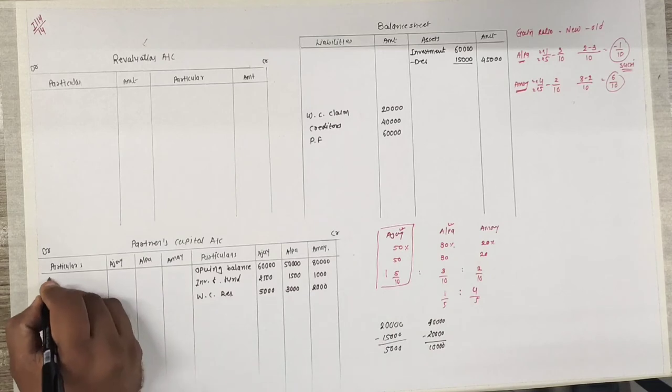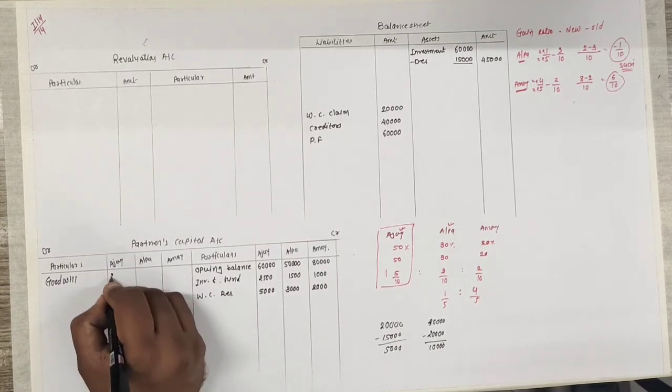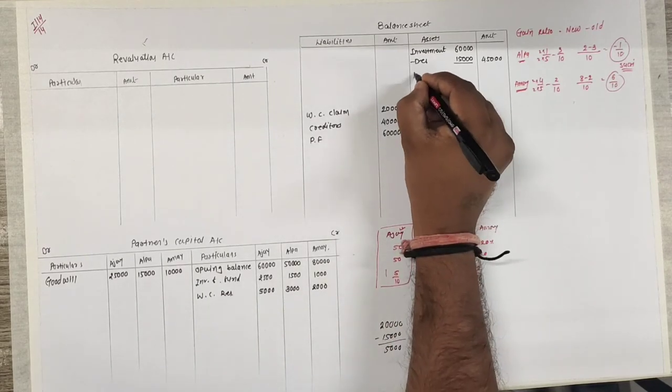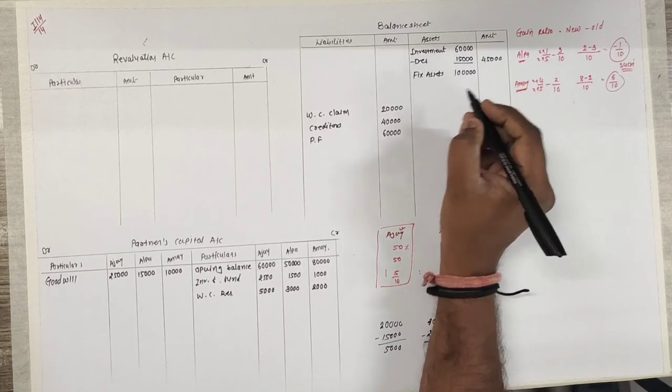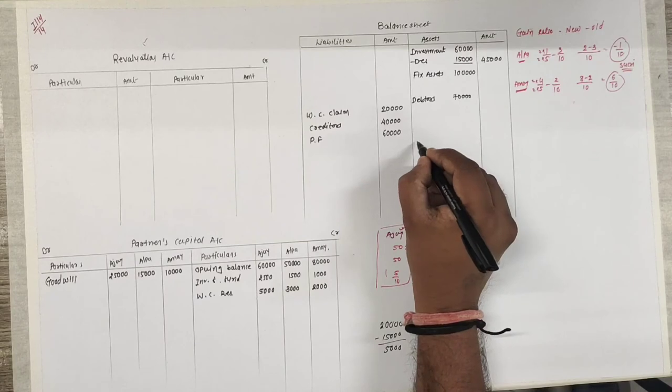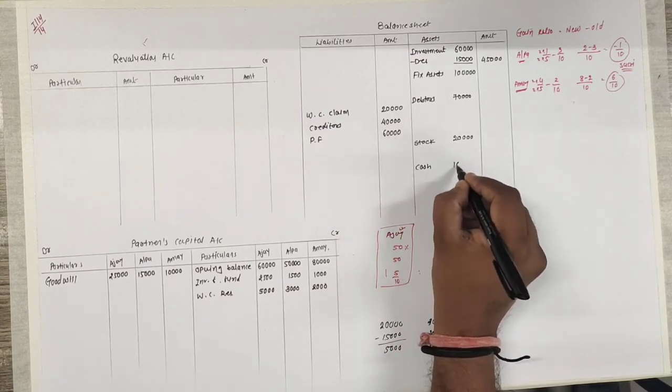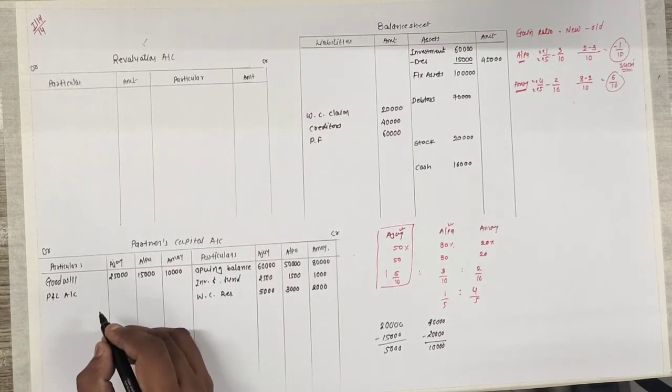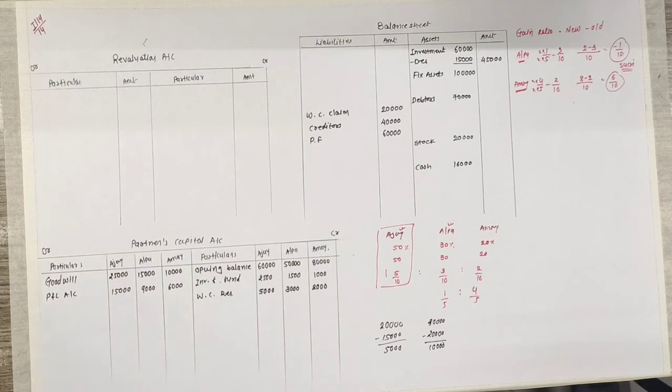Next asset side: goodwill - old goodwill shared by old partners in old ratio, 50,000 in 5:3:2 ratio gives 25,000, 15,000 and 10,000. Other fixed assets - balance amount 1,000,000. Investment. Debtors 70,000 minus 6,000 reserve. Stock adjustment 20,000. Cash 16,000 and last one profit and loss account - partners share 30,000 in 5:3:2 ratio: 15,000, 9,000 and 6,000.